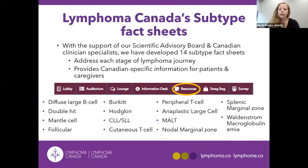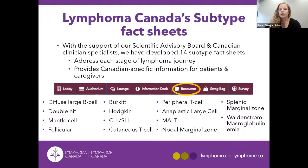Lymphoma Canada has a subtype fact sheet on our website, also located in the resources tab on the conference platform. This is concise and clear information reviewed by our scientific advisory board and Canadian clinicians, which addresses each stage of your lymphoma journey and provides Canadian-specific information for patients and their caregivers.